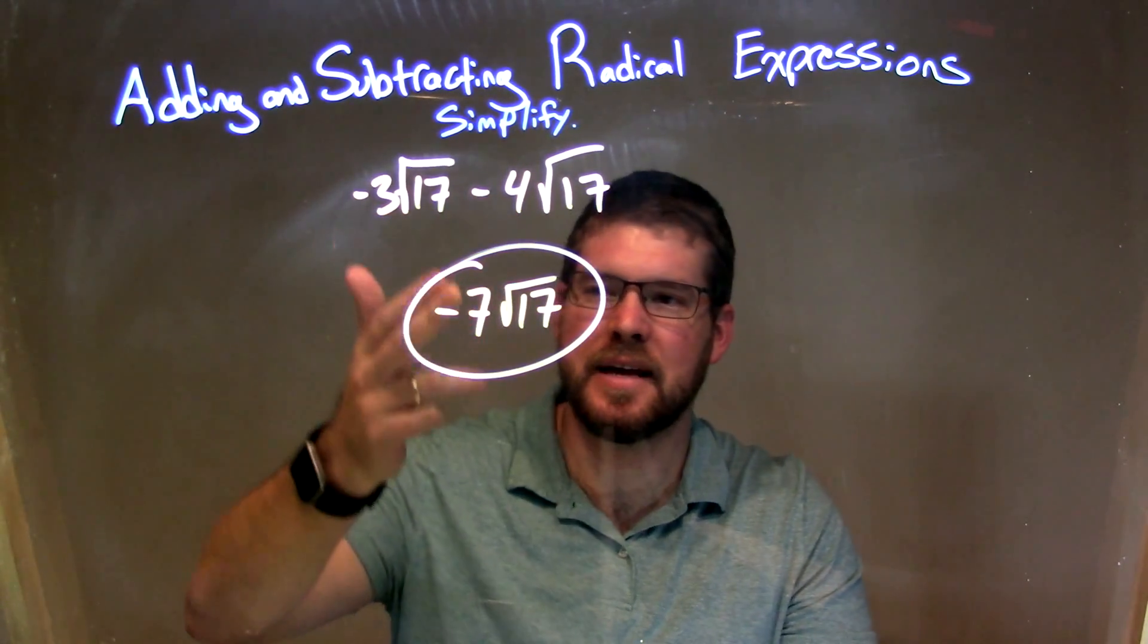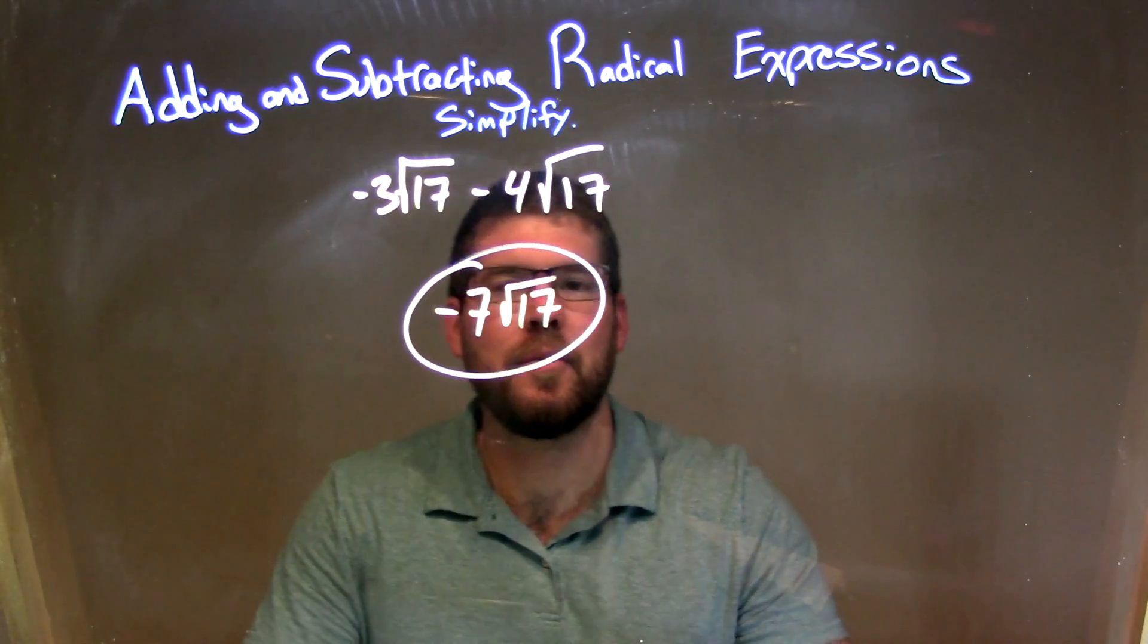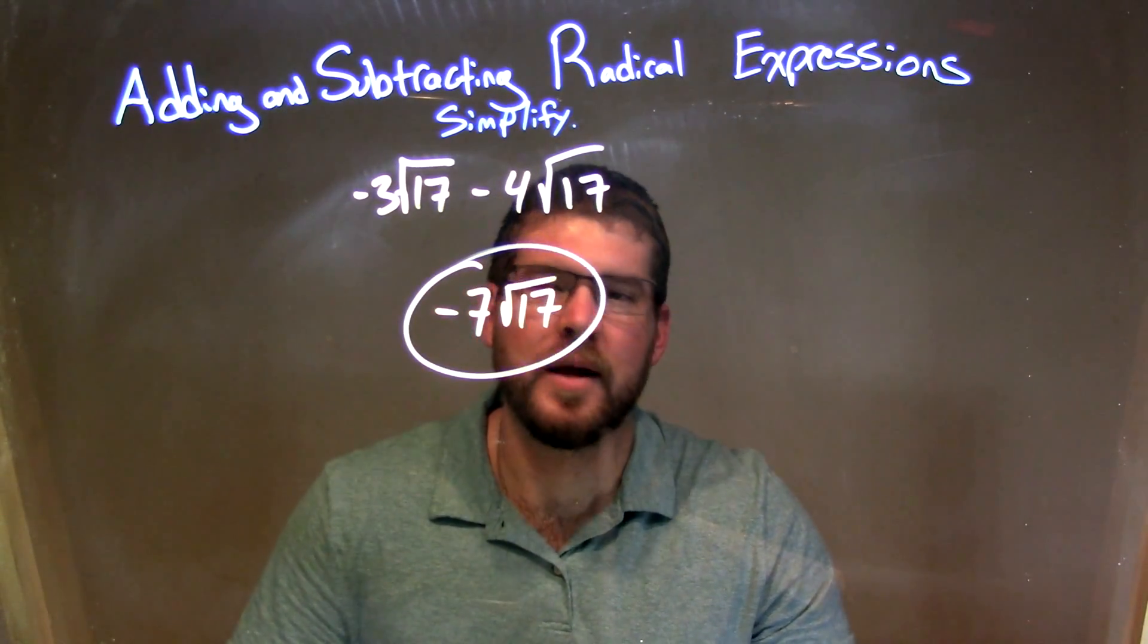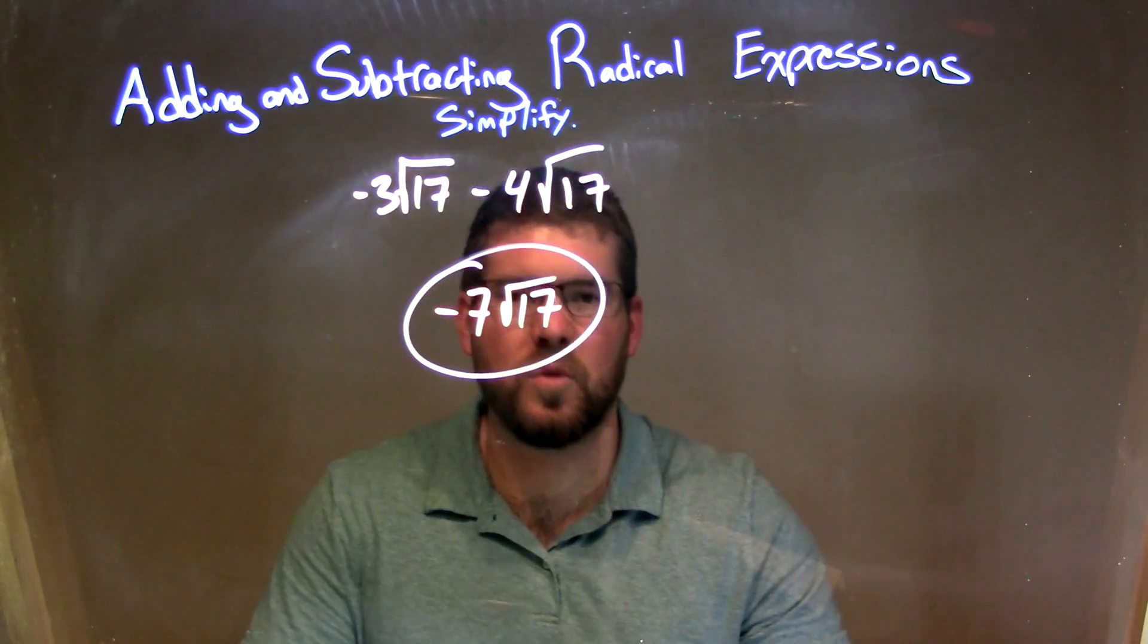and we can stick to negative 3 minus the 4, which is negative 7. And then we just bring down the square root of 17 to give us our final answer of negative 7 times the square root of 17.